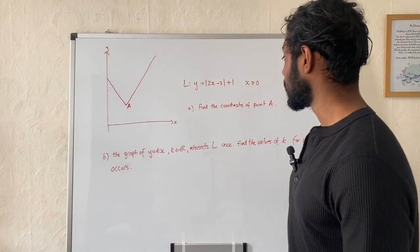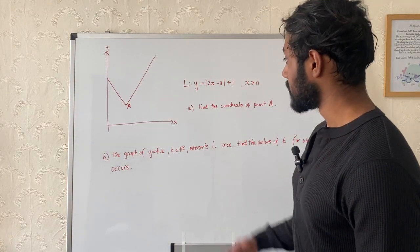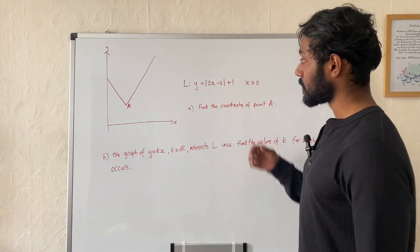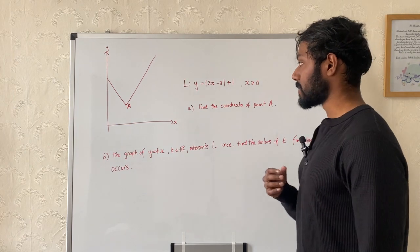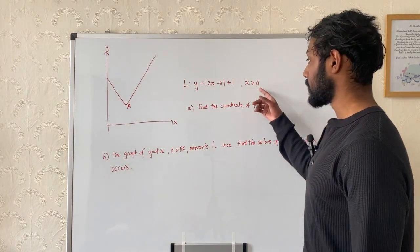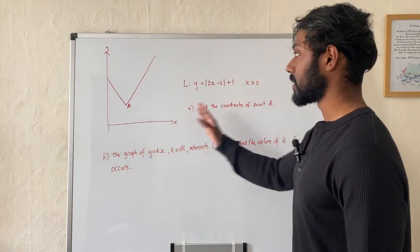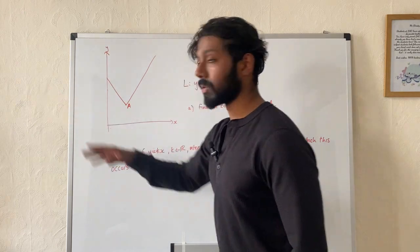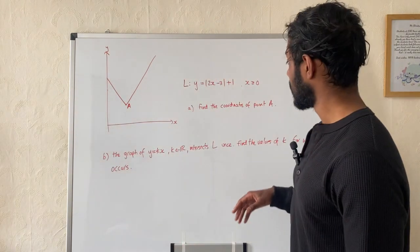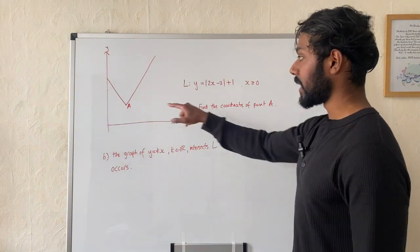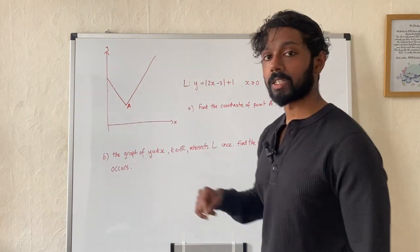So with this question, it's a modulus graph and they've said y equals modulus of 2x minus 3, plus 1, where x is more than or equal to 0. So you can see here we don't have anything to the left of the y-axis, and it says find the coordinates of point A, which is that vertex point.